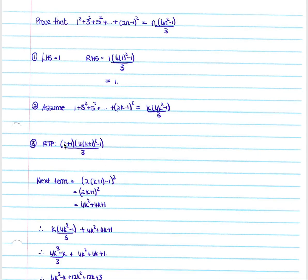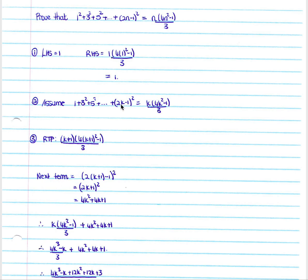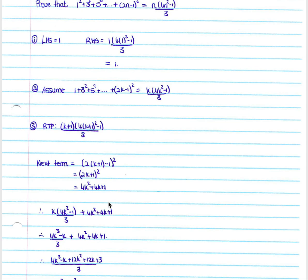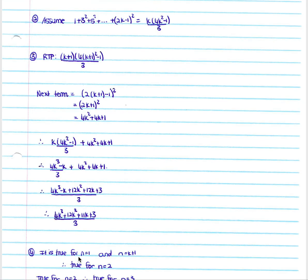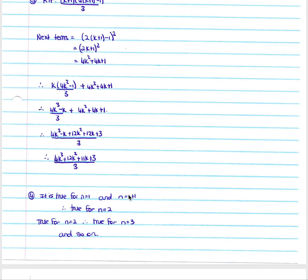For step three we are required to prove it true for n equals k plus 1. The next term is found by substituting k plus 1 into (2k minus 1) squared, which comes out as 4k squared plus 4k plus 1. We take the assumed sum and add the next term, simplifying down to (4k squared plus 12k squared plus 11k plus 3) over 3, which equals the required expression when multiplied out. Therefore we've proven it true for n equals k plus 1. In our fourth step we simply conclude that by mathematical induction the statement holds.